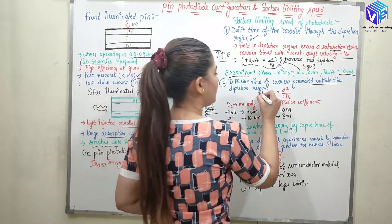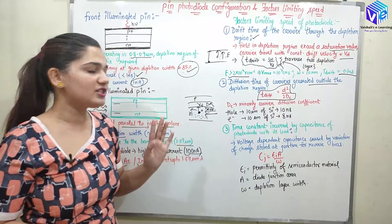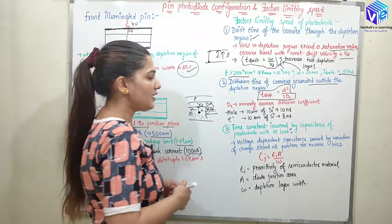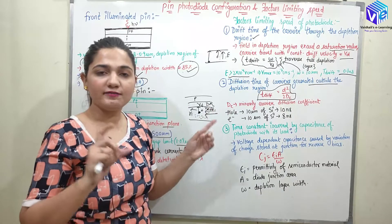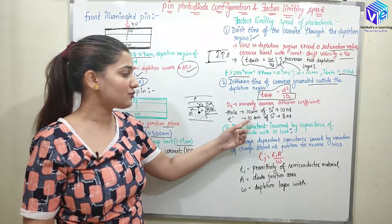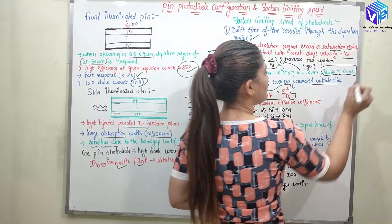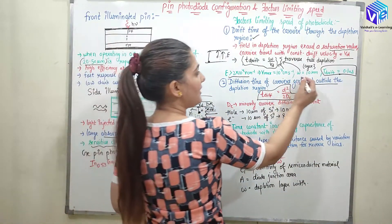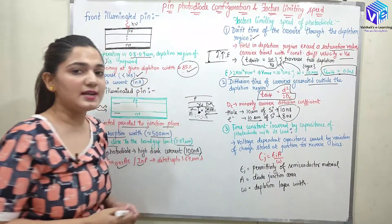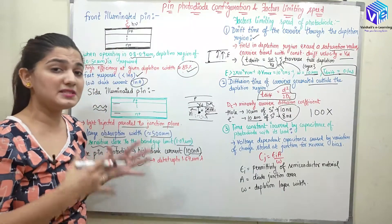The diffusion time is calculated as d² / (2Dc), where Dc is the minority carrier diffusion coefficient and d is the distance where the carrier was generated outside the depletion region. For holes traveling 10 micrometers in silicon through diffusion, it takes 10 nanoseconds. For electrons traveling 10 micrometers in silicon, it takes 8 nanoseconds. Compare this to the drift time of 0.1 nanoseconds for the same 10-micrometer distance — T_drift is about 100 times less than T_diffusion.